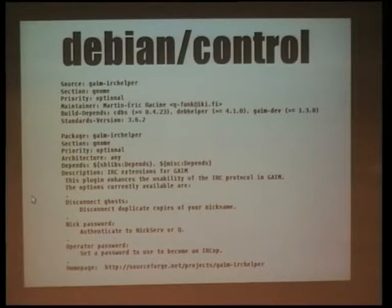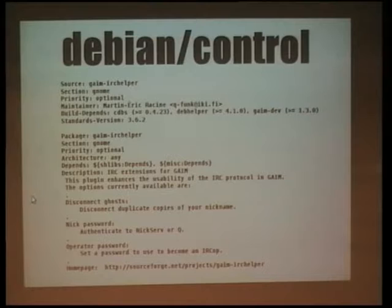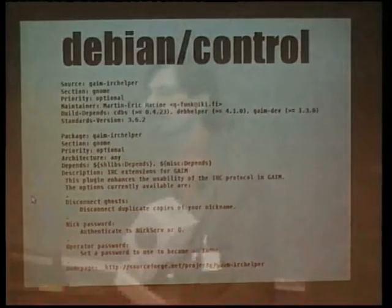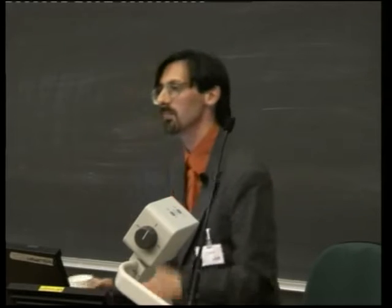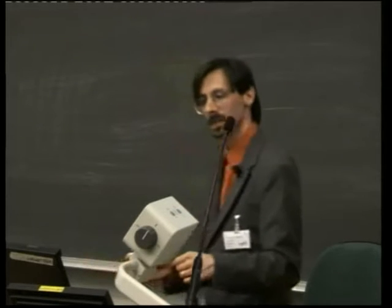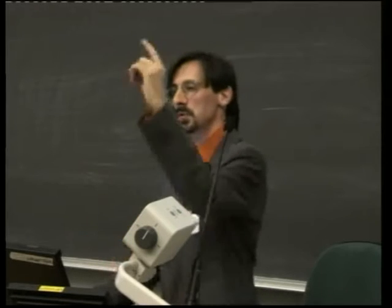The next phase is the actual binary package we're about to generate. Since I'm only generating one binary package I'm calling it the same name: gaim-irc-helper. Section and priority — if you're only generating one target as I'm doing here, it's somewhat optional in the binary stanza since what you specify in the source stanza becomes a default for all remaining binary stanzas. But I always include it just to be certain because I always end up adding other targets later on — it's just a habit.